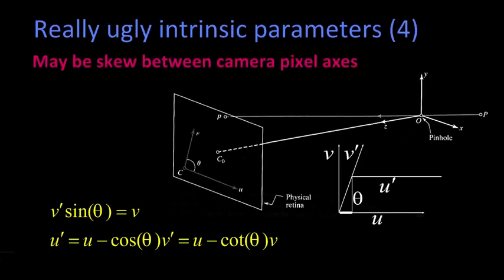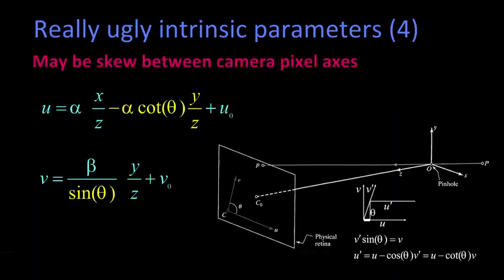So that's what's shown in this figure here. The idea is that the ideal U and V are this way. But maybe the sensor is actually sampled that way and that way. That is, that the actual sampling of U and V are not perpendicular, and they're off by some angle theta. So that's what these equations are showing you here. They're showing you the relationship between the V prime, which is measured, and the actual V, the U prime, and the actual U.